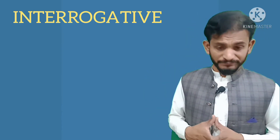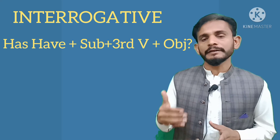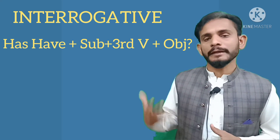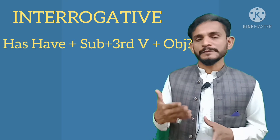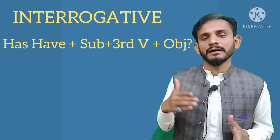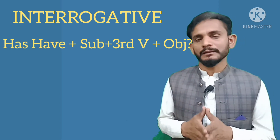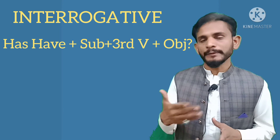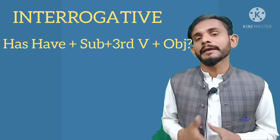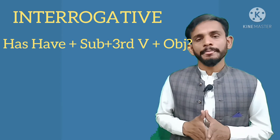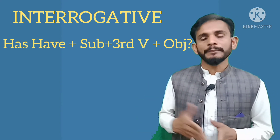اب چلتے ہیں interrogative یعنی سوالیہ sentences کی طرف۔ جب بھی interrogative sentences بناتے ہیں تو helper verb سب سے پہلے لگاتے ہیں۔ Present perfect tense میں has یا have استعمال کرتے ہیں۔ Interrogative کا structure ہے: Has/Have + subject + third verb + object + ؟